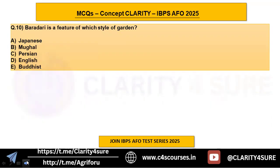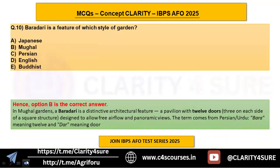The last question: baradari is a feature of which style of garden? IBPS does not focus much on floriculture, but it may always be a surprise element. Options are Japanese, Mughal, Persian, English, or Buddhist. The answer is option B, Mughal garden. A baradari is a distinctive architectural pavilion with 12 doors — the term comes from Persian/Urdu where 'bara' means 12 and 'dar' means doors. It was designed to allow free airflow and panoramic views.